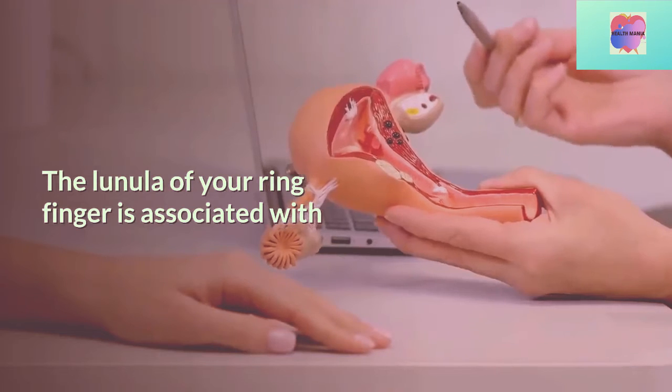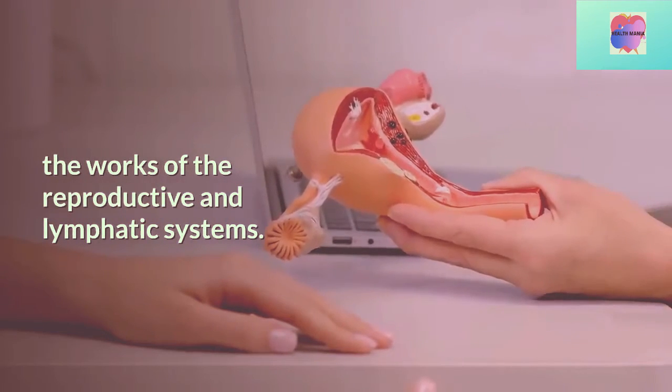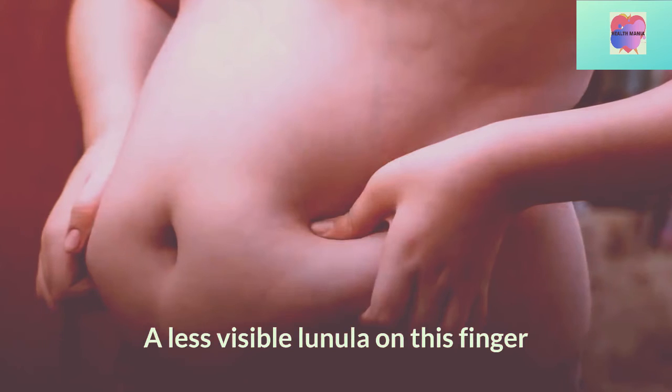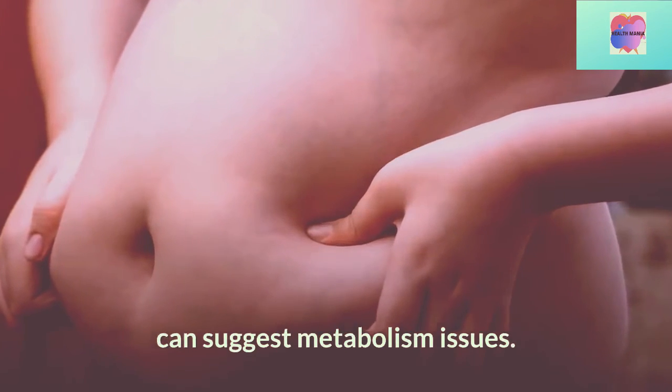The lunulae of your ring finger is associated with the works of the reproductive and lymphatic systems. A less visible lunulae on this finger can suggest metabolism issues.